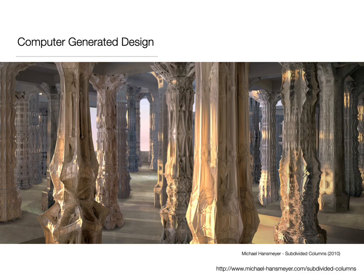A significant shift since the 1980s is that computer programs have moved from aiding the design process to generating designs itself, or at least having a hand in generating designs. An example of this is Michael Hansmeier's forms and products. These result from computational data that are the sequence or subdivisions of simple geometric forms carried out algorithmically thousands of times. They are quite simple structures mathematically speaking, but each shape is a unique evolution of the basic form.